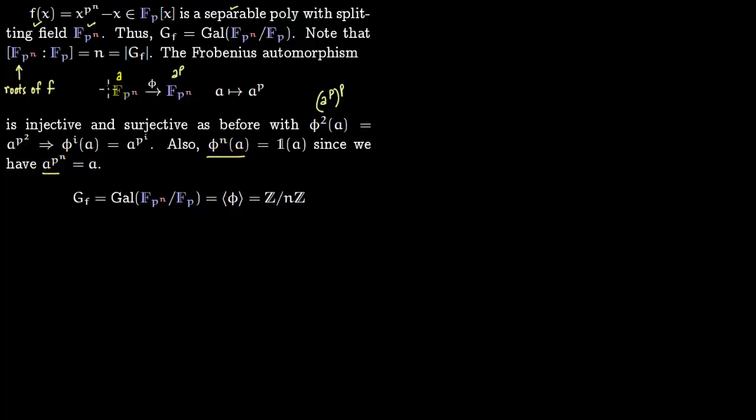But this a lies in F_(p^n), so it is a root of f. If you put a^(p^n) - a this equals 0, so a^(p^n) = a. Thus if you apply phi^n it is as good as applying the identity map.